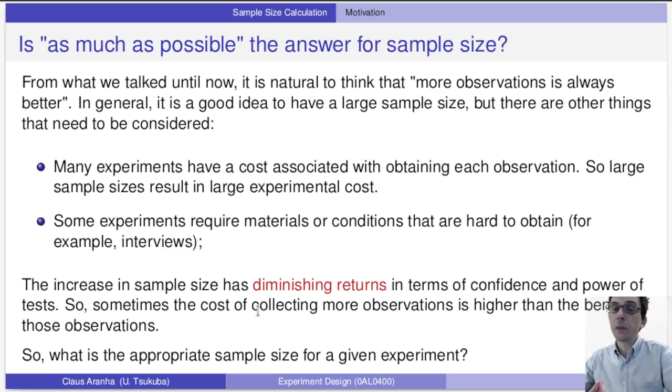As much as possible is not always the answer when it comes to sample sizes. In general, it's a good idea to have a sample size that is large enough, but there are other things that you need to consider. For example, many experiments have a cost associated with obtaining each observation. For example, if you are doing an interview, you have to group many people to ask the interview. If your experiment has a monetary cost, for example, if you're running a computer experiment, there is an electricity cost. There is also a time cost. Maybe you have a final report that you have to submit by the end of the month, and you cannot run infinite experiments because it will not be enough time.